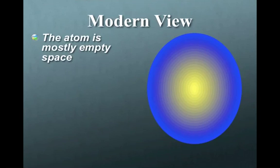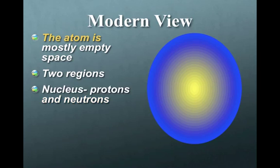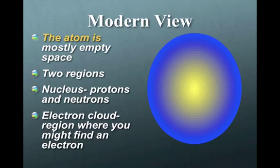The atom is mostly empty space. We have two regions in modern day atomic theory. The nucleus, which consists of protons and neutrons. And the electrons, or the electron clouds, the region where you find, or where you might find an electron.